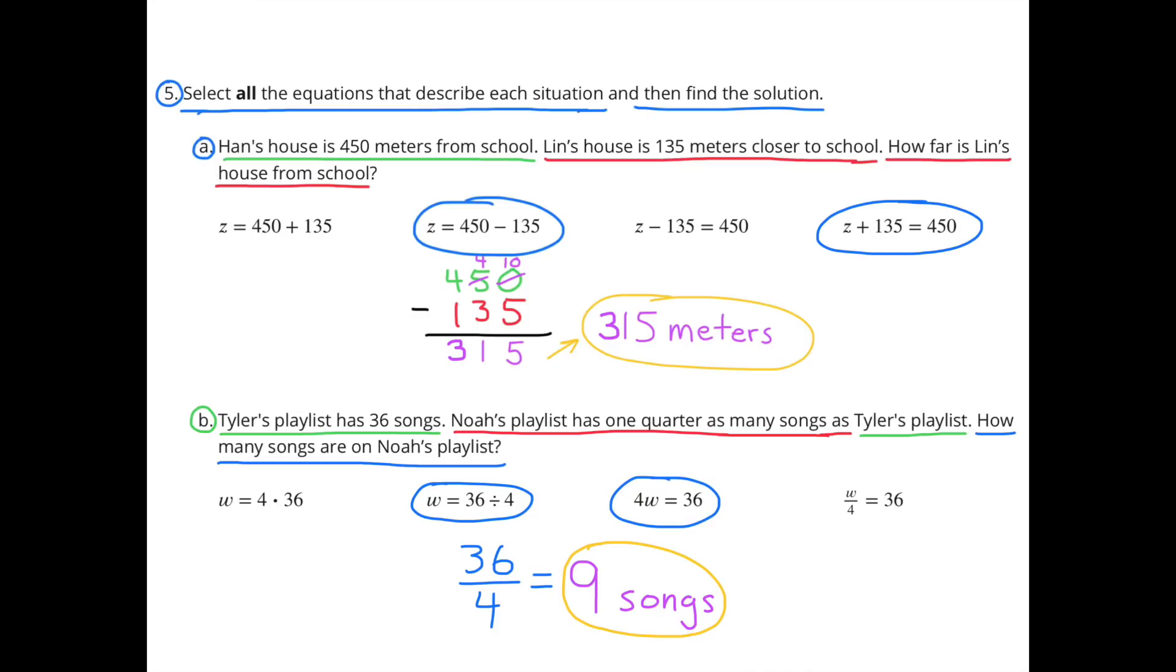B. Tyler's playlist has 36 songs. Noah's playlist has 1 quarter as many songs as Tyler's playlist. How many songs are on Noah's playlist?